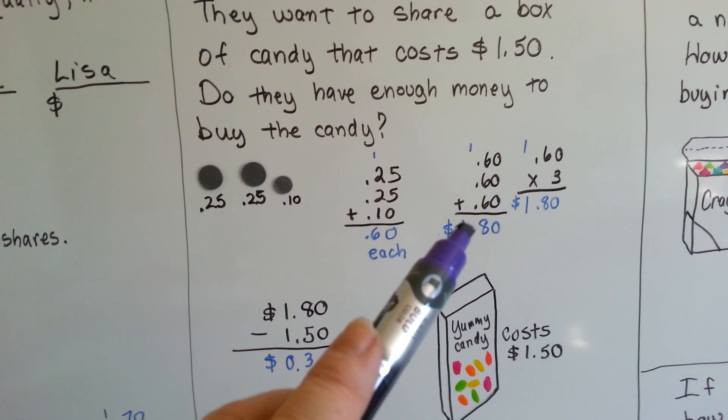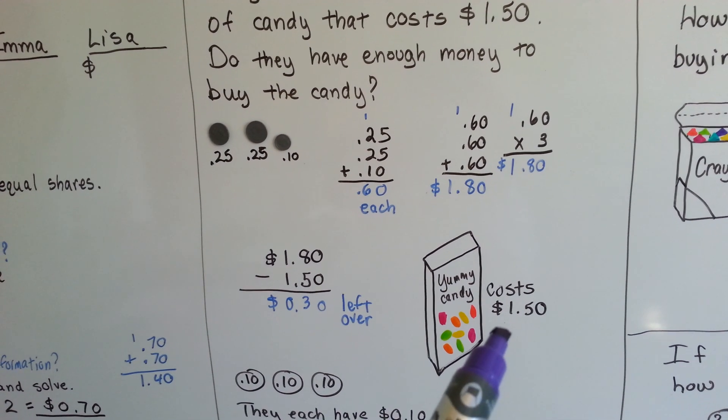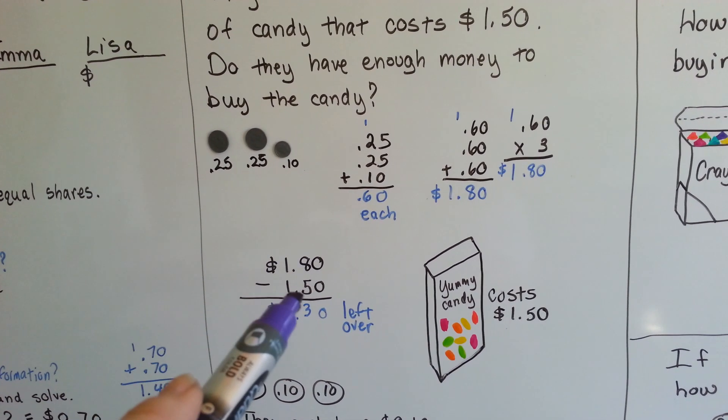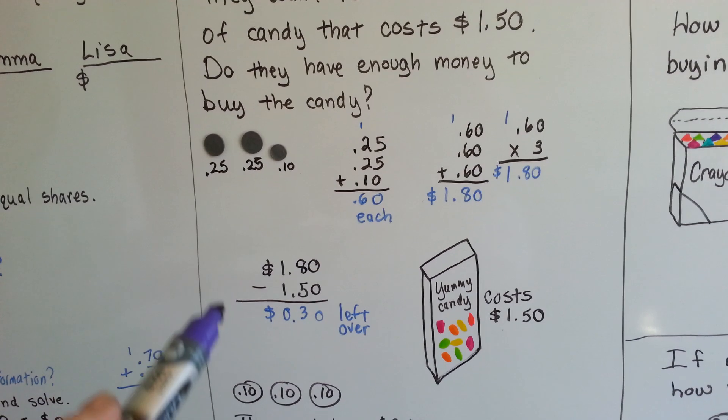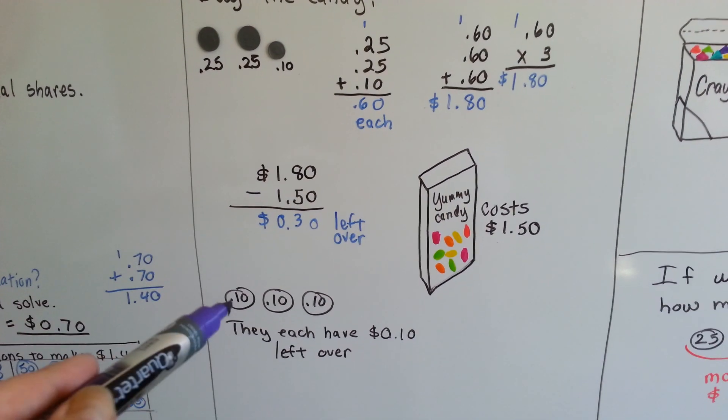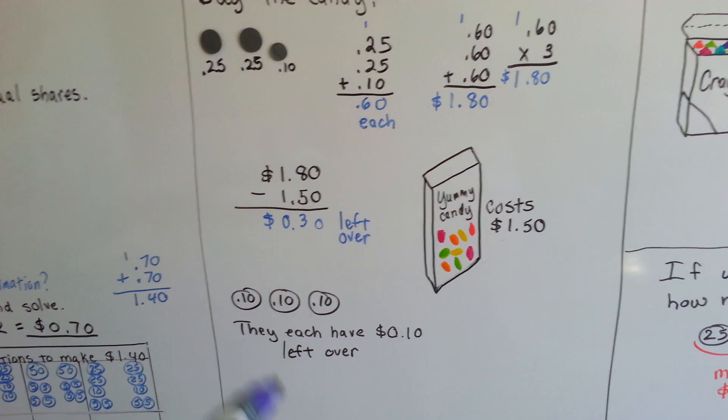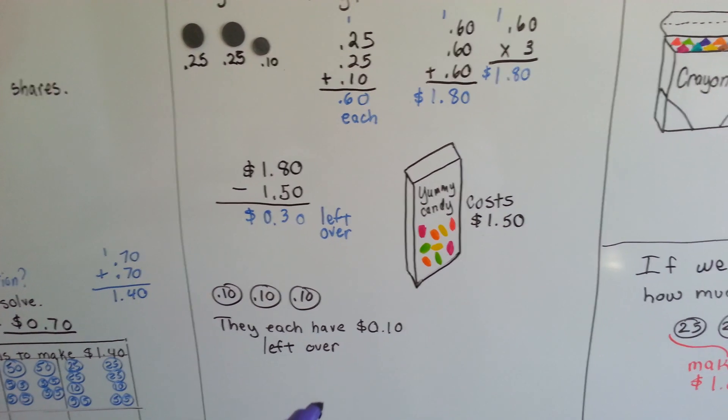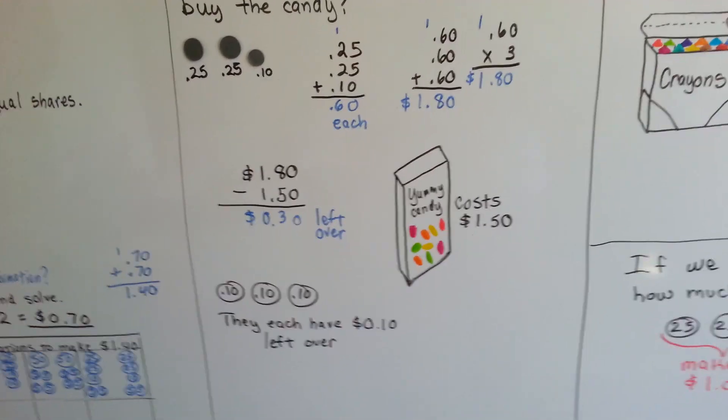So now we know together they have a dollar eighty, and the candy costs a dollar fifty. So we subtract the amount of the candy from the amount they have, and we have thirty cents left over, which means the girls each get ten cents back for change. That worked out real well, and now they can split the yummy candy.